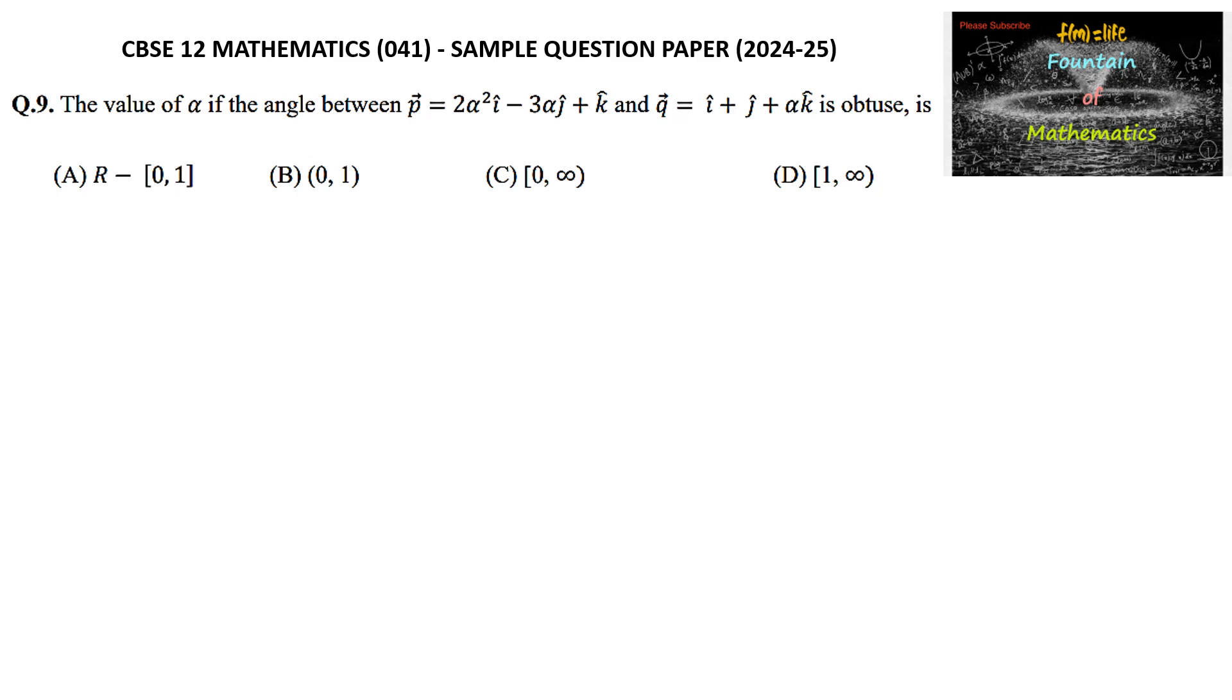We need to find the value of alpha if the angle between the two vectors p and q is obtuse. Let theta be the angle between vector p and vector q.